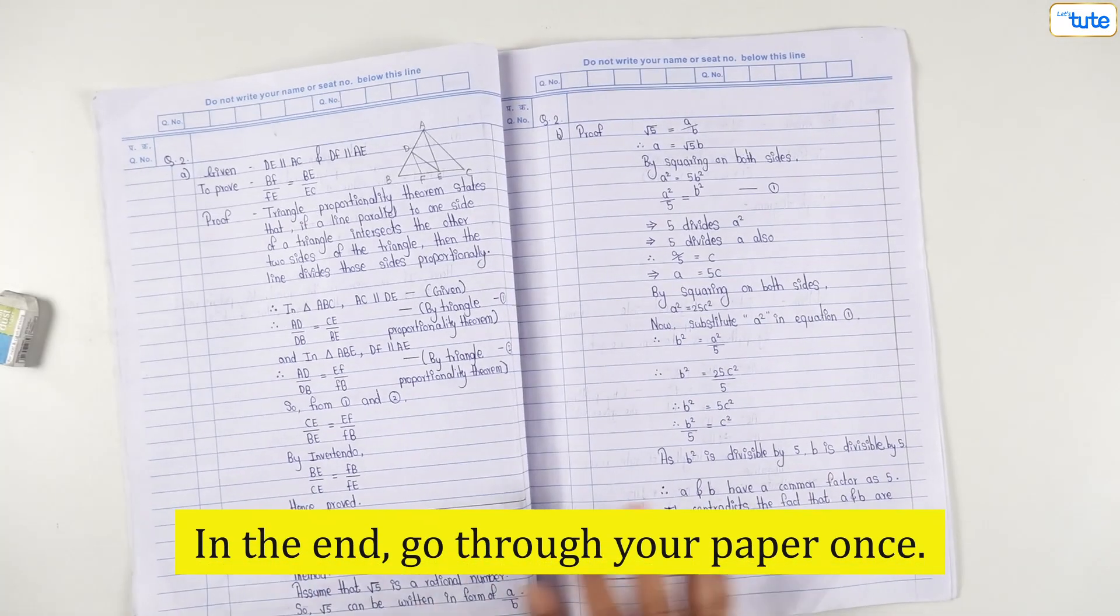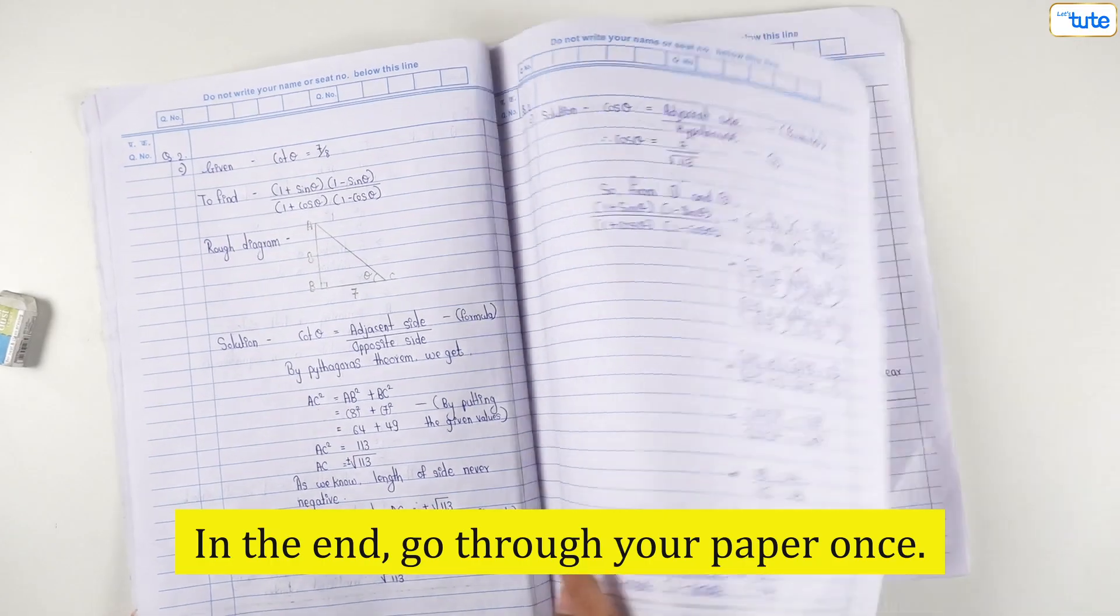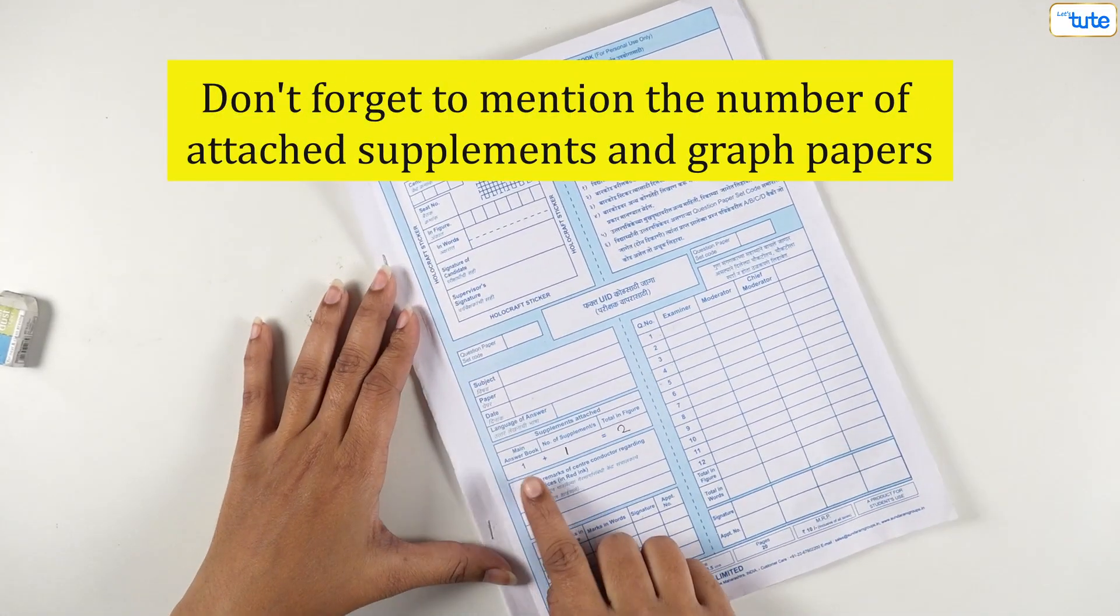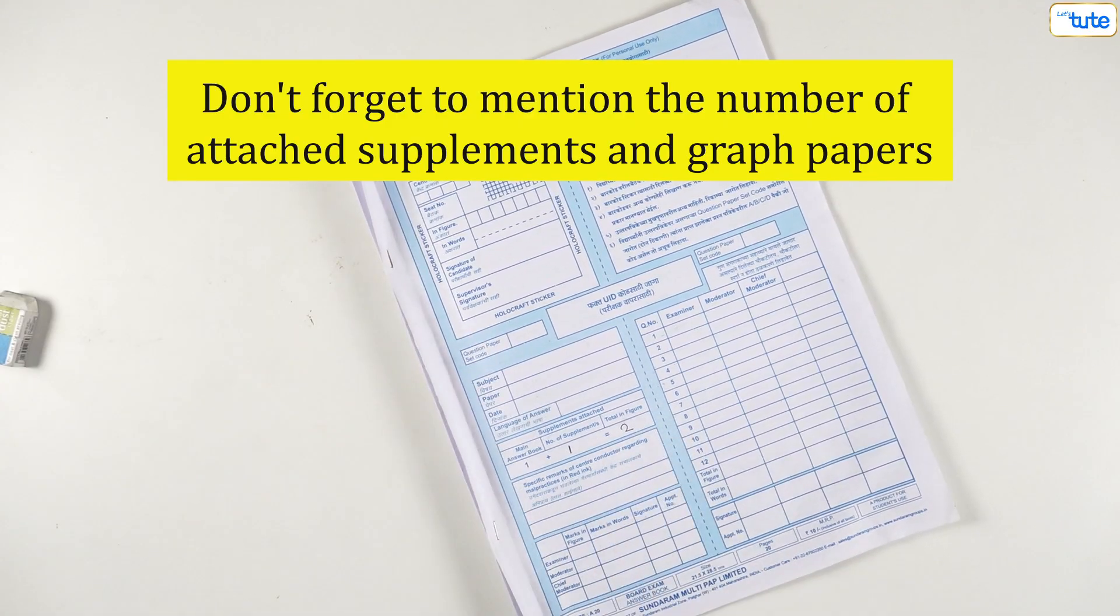Now, in the end, you can go through your paper once. Check for any silly mistakes or errors in the calculations. Don't forget to mention the number of attached supplements and graph papers.